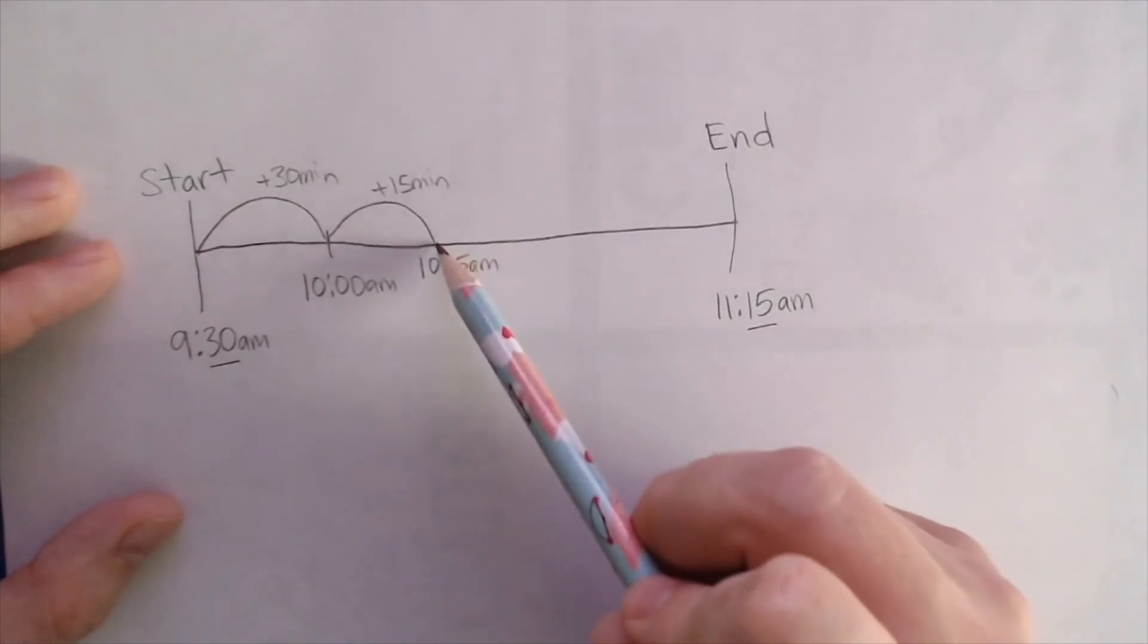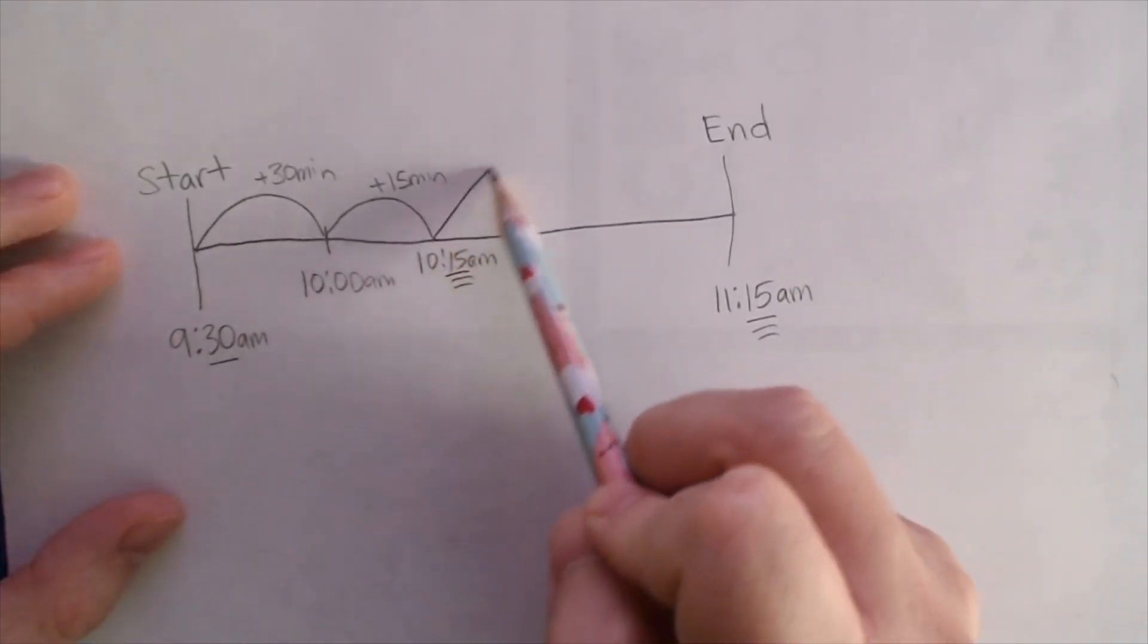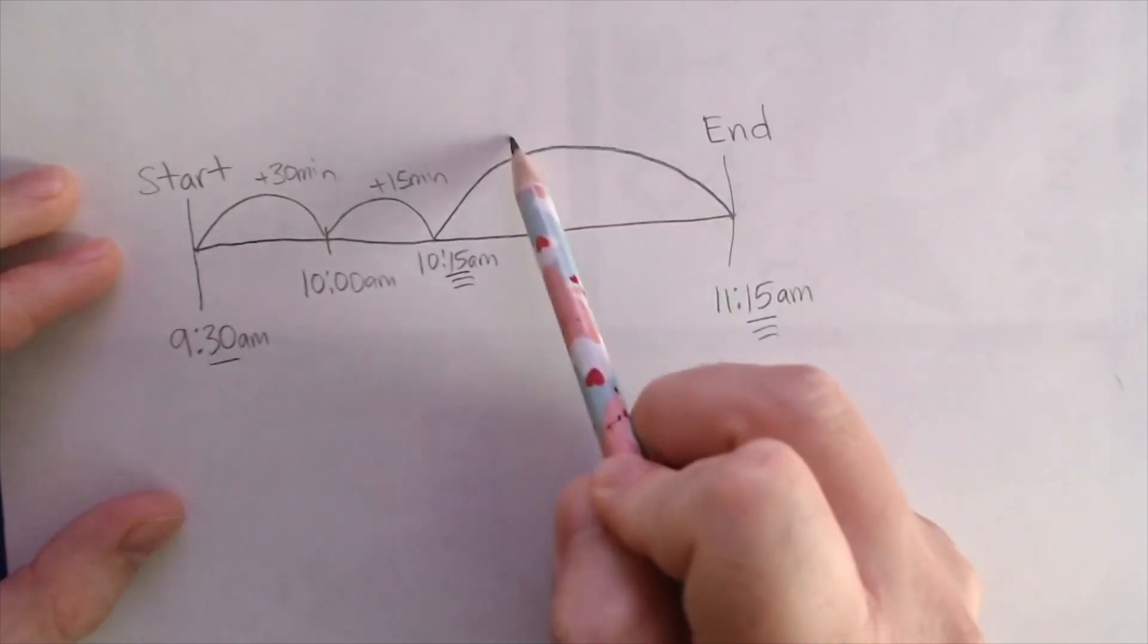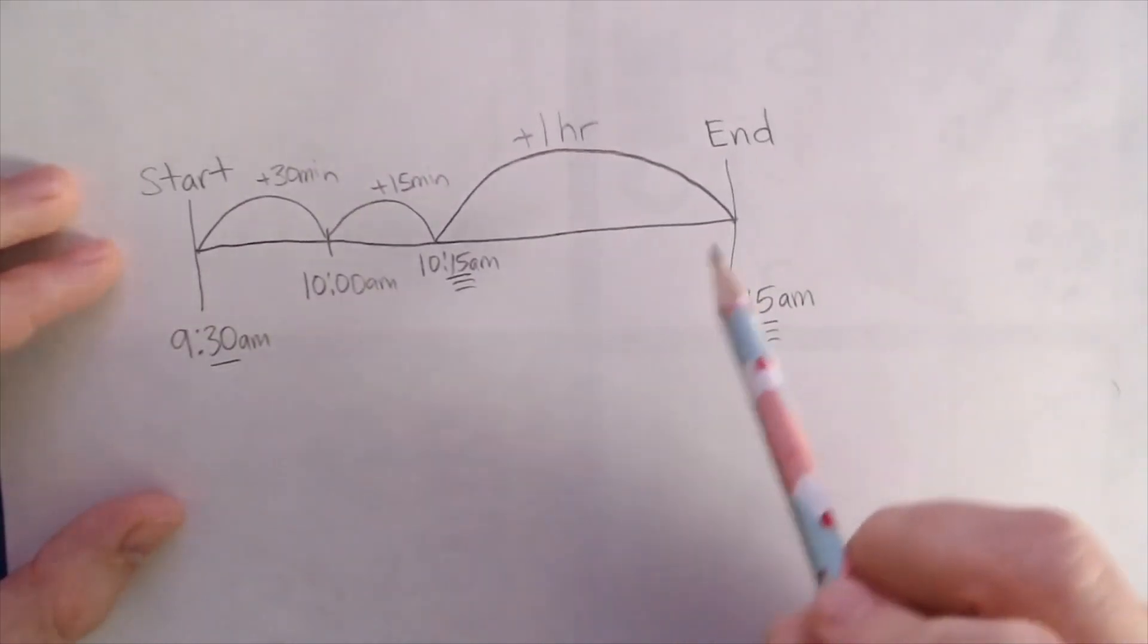Now, my minutes match. 10:15 and 11:15. So, all I have to do now is add hours until I reach the end time. As you can see, if I'm at 10:15, add one hour, and that puts me at 11:15am.